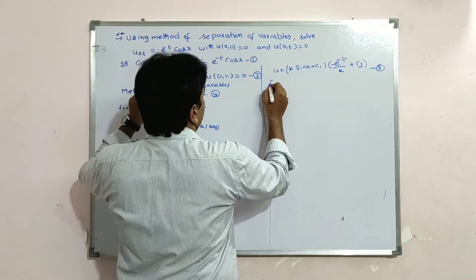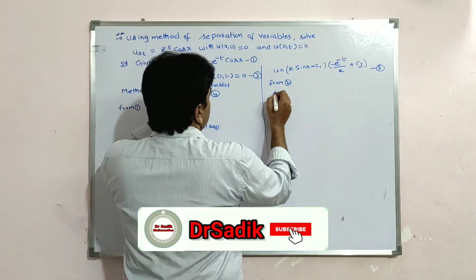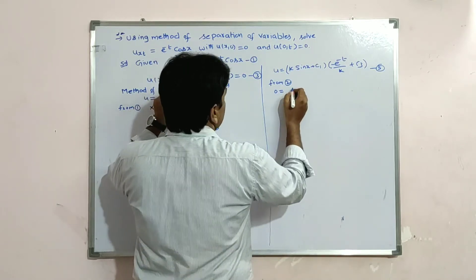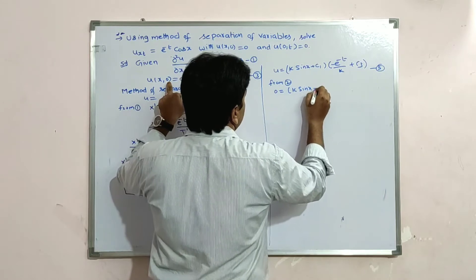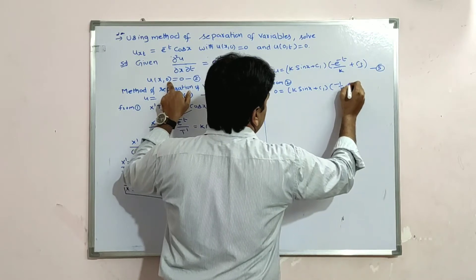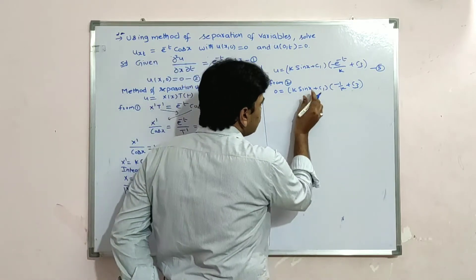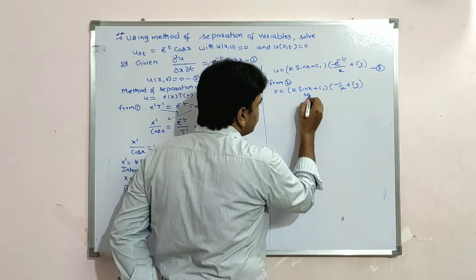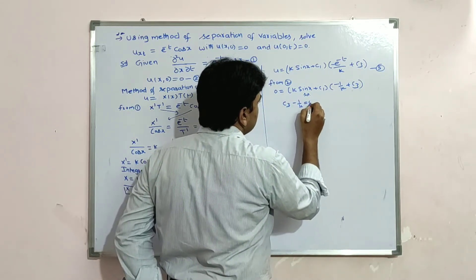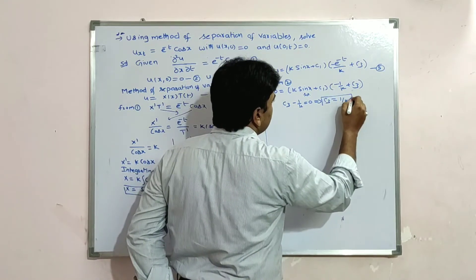From condition 2, u(x,0) = 0: substituting t = 0 gives (k·sin(x) + c₁)·(−1/k + c₃) = 0. Since this must be zero for all x, and k·sin(x) + c₁ is not identically zero, we need −1/k + c₃ = 0, therefore c₃ = 1/k.